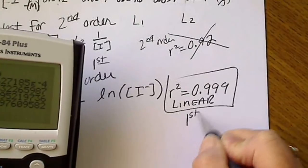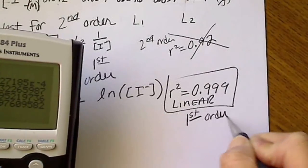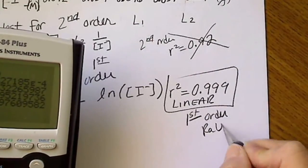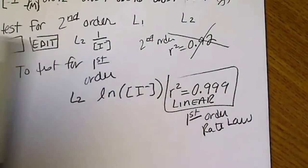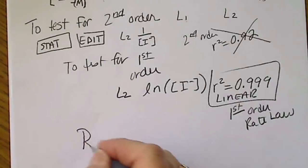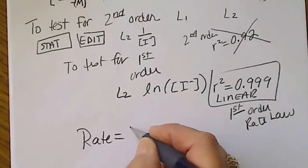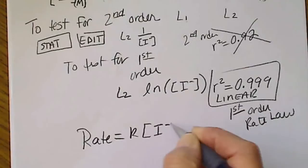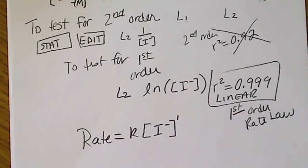So I do have a first-order rate law. And since that's the case, I can just write, I know that rate equals k times [I-] to the first power.